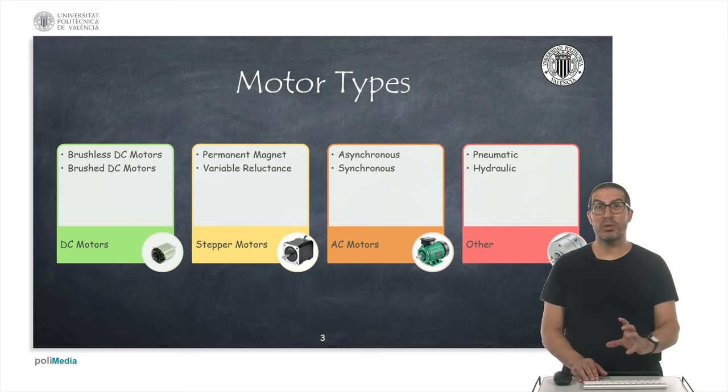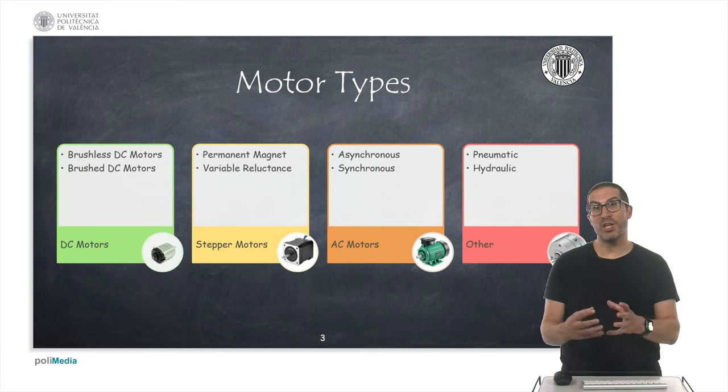Some robots, especially in industrial applications that require a motor to rotate at high speed, use alternating current or AC motors. Here we can find asynchronous motors in which the speed of the rotor rotates at a different speed than the speed of the stator, or synchronous motors in which the speed of both stator and rotor coincides. Some of these motors have a cage-shaped rotor with bars that is known as squirrel cage motors.